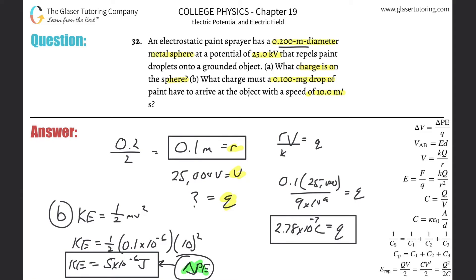Okay. And I also know that it says what charges on the sphere. So I just got to read it again. What charge must a 0.1 milligram drop of paint have to arrive at the object with that? Yeah. So we're going to look for Q this time. We don't know what the charge is, but we do know that the voltage is going to be the same. Why do I know that? Well, otherwise I can't solve it. So I have to make that assumption.